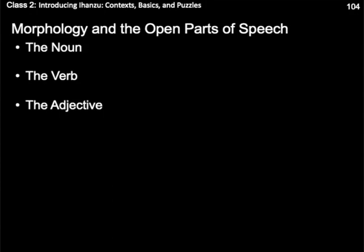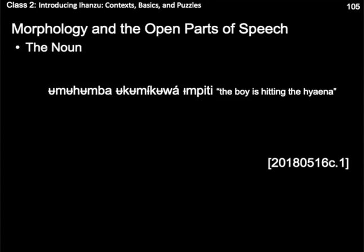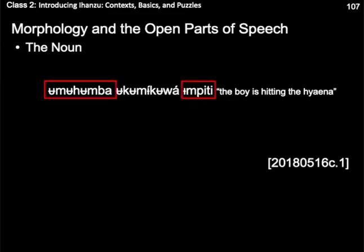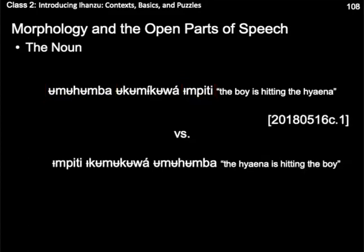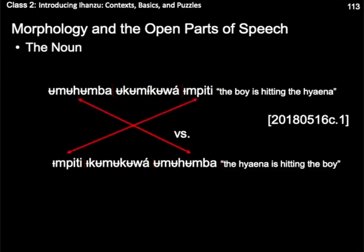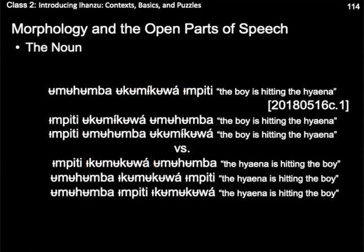Moving now to morphology and the open parts of speech, we will in turn look at the noun, followed by the verb, followed by the adjective. Here is a simple phrase in Ihanzu: umuhumba okumiko ampiichi, meaning 'the boy is hitting the hyena'. The phrase has a subject noun, umuhumba, 'the boy', and an object noun, impiichi, 'the hyena'. Ihanzu is primarily a head-marking language, so if we were to create a new phrase in which the hyena is the subject and the boy is the object, there would be no formal change in the morphological form of the noun. Rather, the agreement on the verb would change. You'll also notice that the position of the arguments would typically change, but where agreement explicitly differentiates the arguments, as in this case, the change of position is not obligatory.